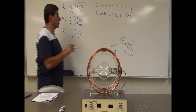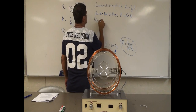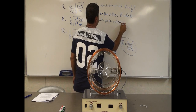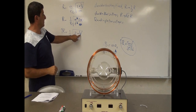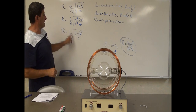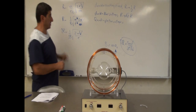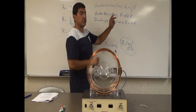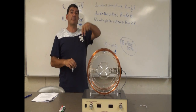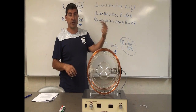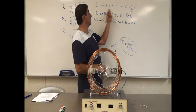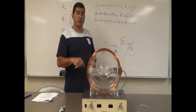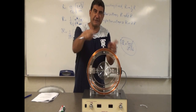If I quadruple the voltage, and I'm taking the square root of 4, that means the radius of the orbit doubles. So for voltage it's a square root relationship — I have to quadruple it to get double the radius. But for the magnetic field, if I double it, the radius goes down by half.